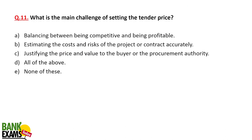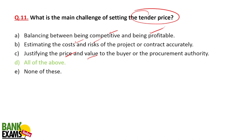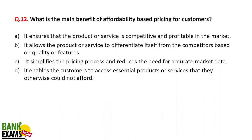What is the main challenge of setting tender prices? In construction contracts — government contracts for building roads — companies place their bids. The bid must be profitable, competitive, meet quality standards, and meet deadlines. The challenges include balancing competitiveness with profitability, estimating costs and risks, and justifying the price and value to the buyer or procurement authority.